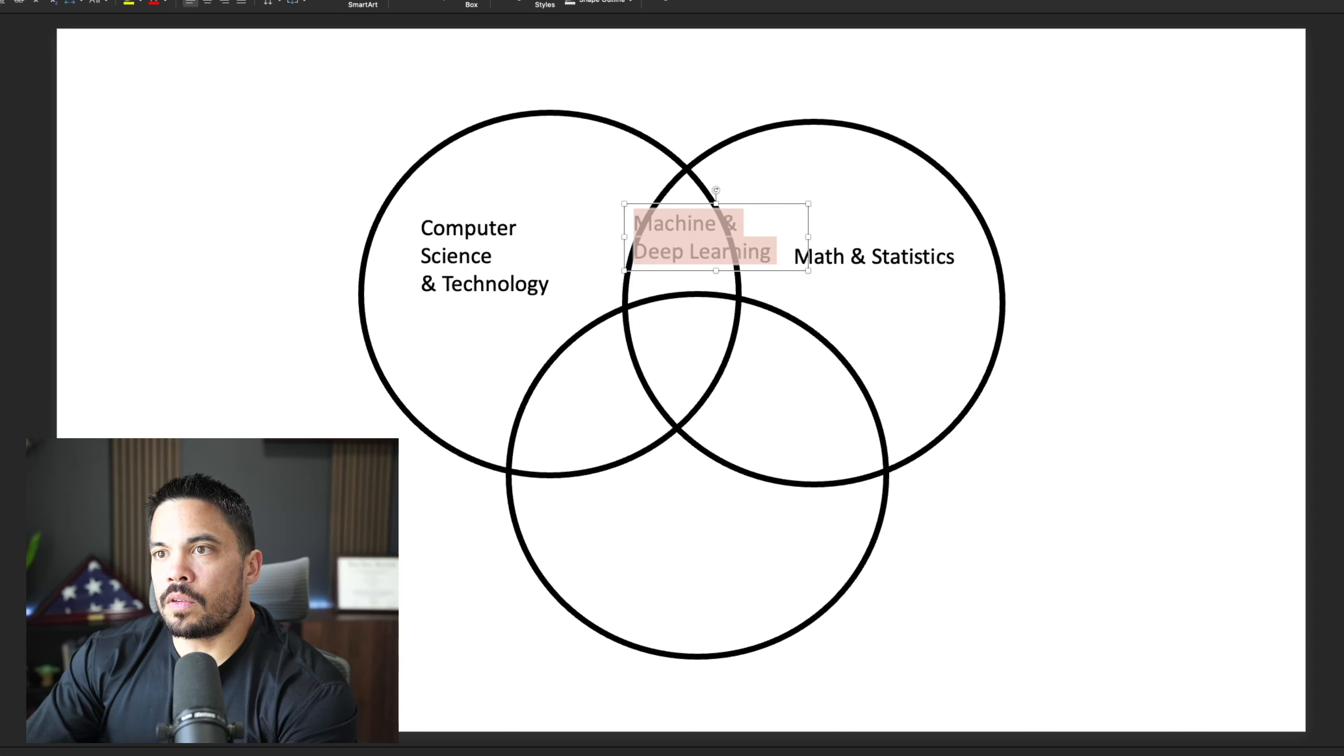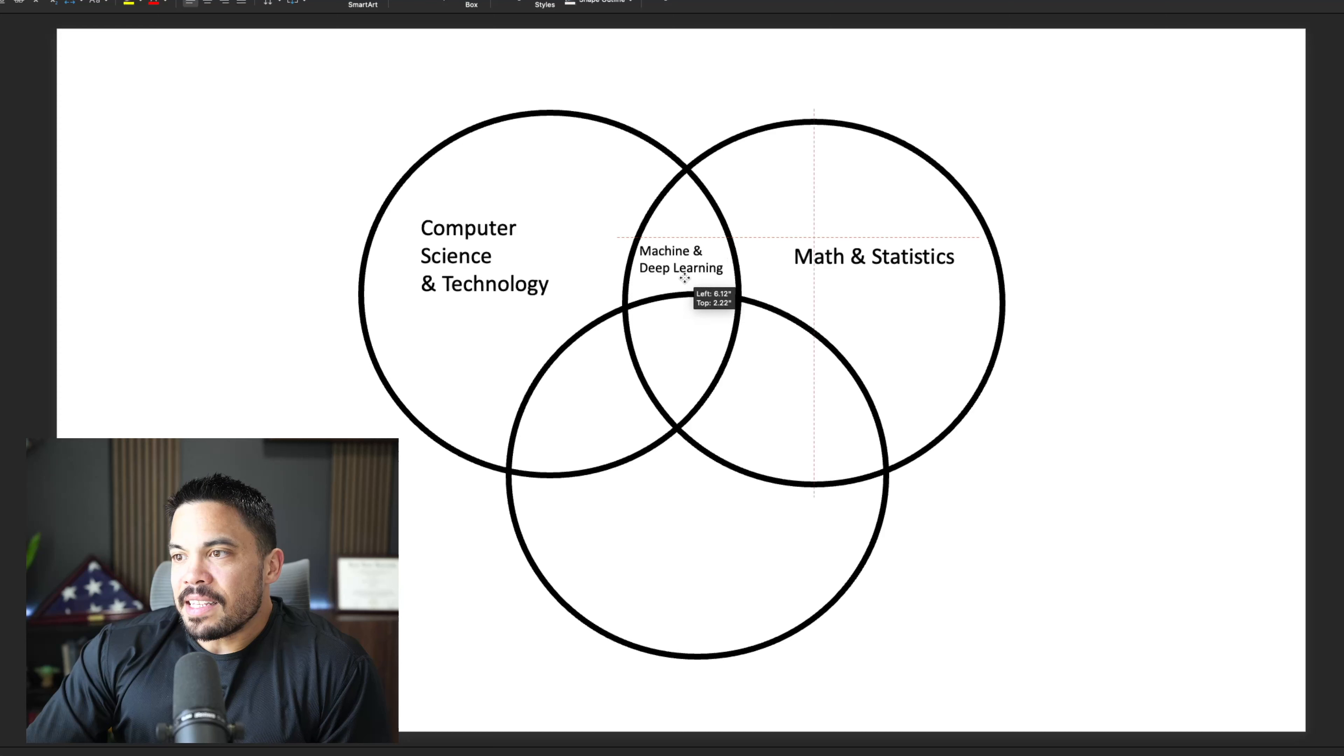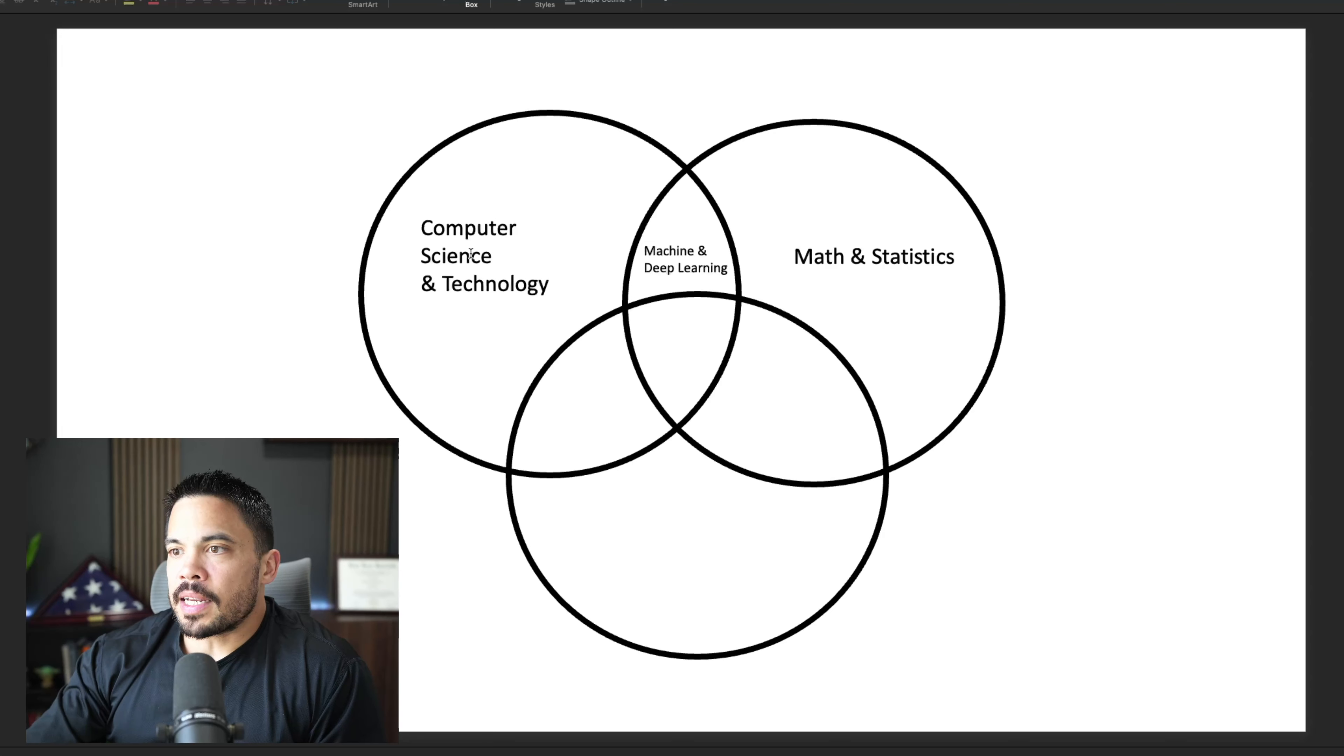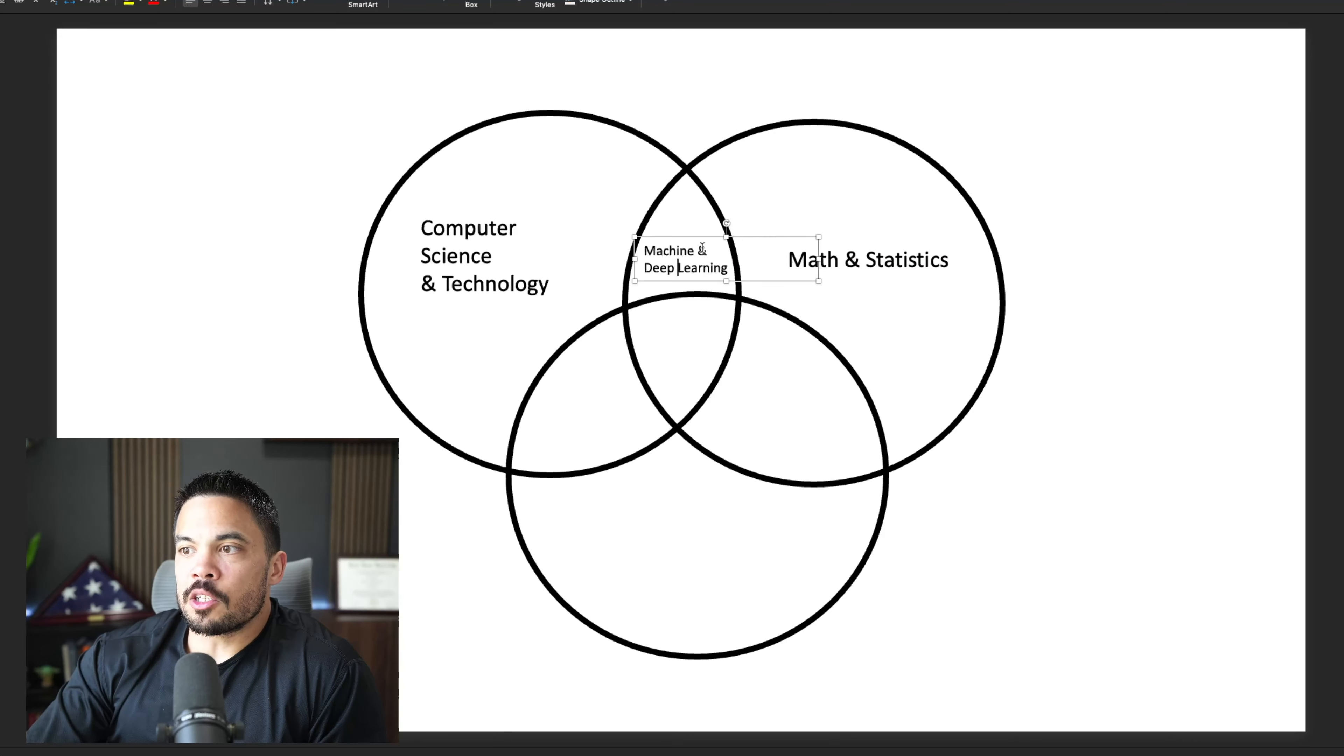And we want to decrease size of that so we can see it better. All right. And that's where we're at this machine learning and deep learning. We've got people or things that can generate in the world of computer science technology and develop the math and statistics to create the machine and deep learning in the middle.